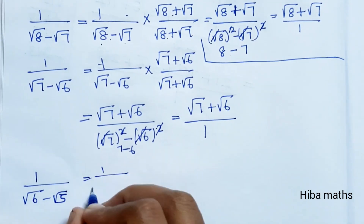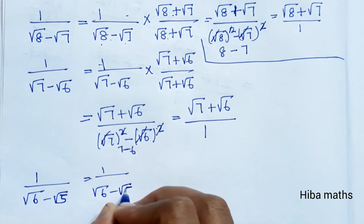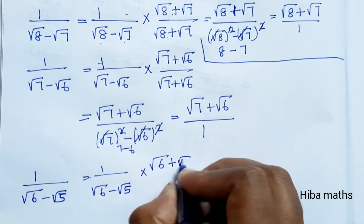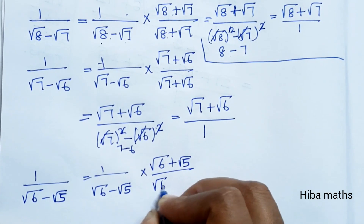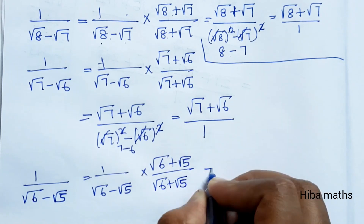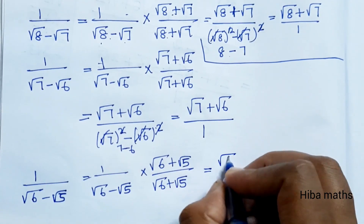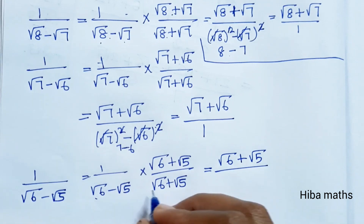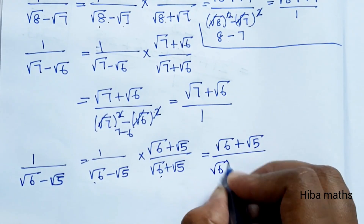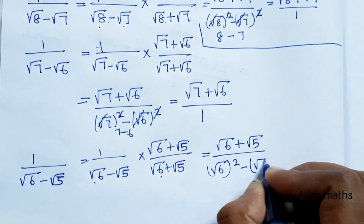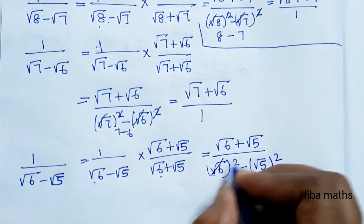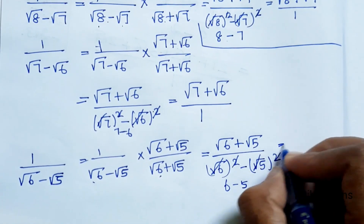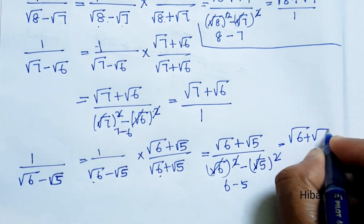For the fourth term, 1/(√6 - √5), multiply by the conjugate (√6 + √5): we get (√6 + √5) divided by (a - b)(a + b) = (√6)² - (√5)² = 6 - 5 = 1. So the fourth term simplifies to (√6 + √5)/1 = √6 + √5.